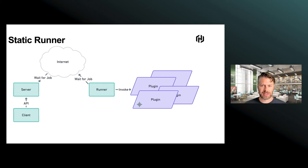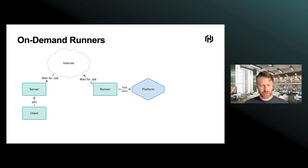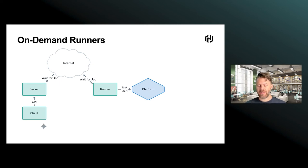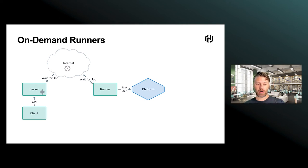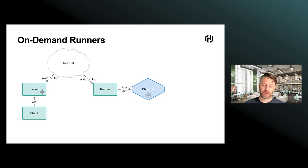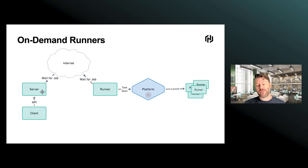Let's look at on-demand runners in a very specific case. Now we have what looks similar, but we've added an extra platform component. When a request comes in — hey, I need to do a build — the server is aware that on-demand runners exist, so it spawns a special job that it passes through to what we call the static runner. That job basically says go start a new runner. That request gets passed over to the platform, which launches a new runner for this particular new job. That new runner then gets the actual work passed down to it through the internet or however connectivity is established.